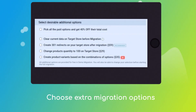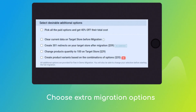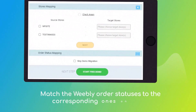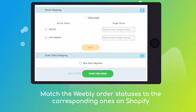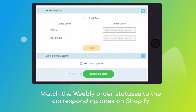Then choose the additional options, like Create 301 redirects on Target store, migrate images from the descriptions, or preserve order IDs, etc. Click the hamburger button to match your Weebly multiple stores, customer groups and order statuses to the Shopify ones.